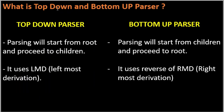The next question is: what is top-down and bottom-up parsing? This is the classification of parsers. In a top-down parser, parsing starts from the root and proceeds to the children, using the leftmost derivation (LMD). In a bottom-up parser, parsing starts from the children and proceeds to the root, using the reverse of the rightmost derivation (RMD).